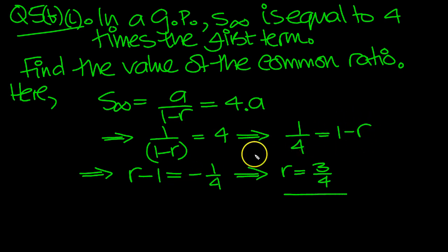Then we multiply both sides by minus one, so this becomes R minus one equals minus a quarter. Move the minus one over: one minus a quarter is three quarters.